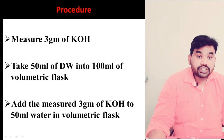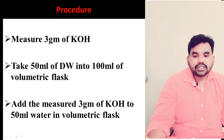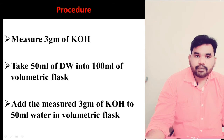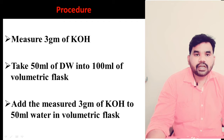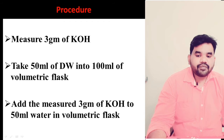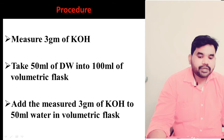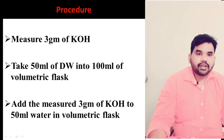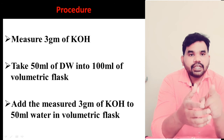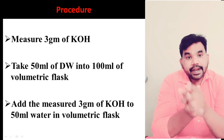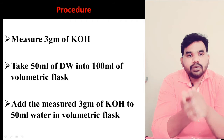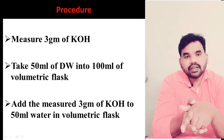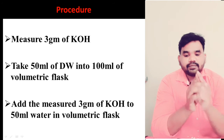Next, the procedure. The first step is to measure 3 grams of KOH using the micro balance — you have to measure 3 grams of potassium hydroxide. Then the next step is to take 50 ml of distilled water into the 100 ml volumetric flask, then add the measured 3 grams of potassium hydroxide to it, and mix it.